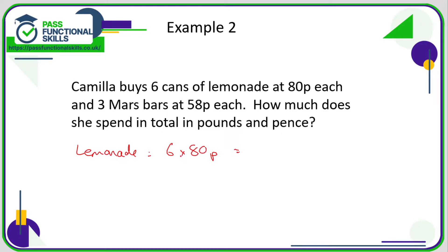Maybe you can use a calculator, but I always like to get people to do things in their heads. Six eights are 48, so six 80s are 480 — that's 480 pence. Divide that by 100, to two decimal places, and that's £4.80.